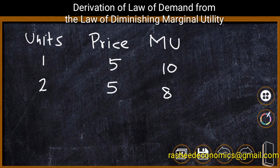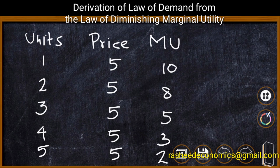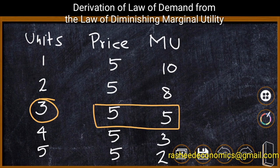This process continues. For the third unit of consumption, the price is 5 rupees and utility is 5 units. For the fourth unit, price is 5 and utility is 3 units. For the fifth unit, we need to pay 5 and marginal utility is 2. From our previous analysis, we have proved that the consumer is in equilibrium at the 3rd unit of consumption, because at this stage price is equal to marginal utility. This is the point of consumer equilibrium and the best point with regard to consumer satisfaction.